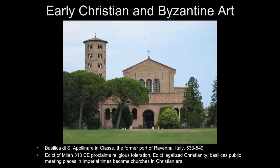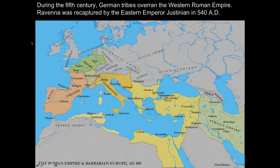That question — why is it easier to change ideas than art — might be worth exploring. During the 5th century, Germanic tribes overran the Western Roman Empire, and Ravenna was recaptured by the Eastern Emperor Justinian in 540 AD. As stated before, the Roman Empire did end, but only the western part — the rest of it continued on in some form throughout the class.